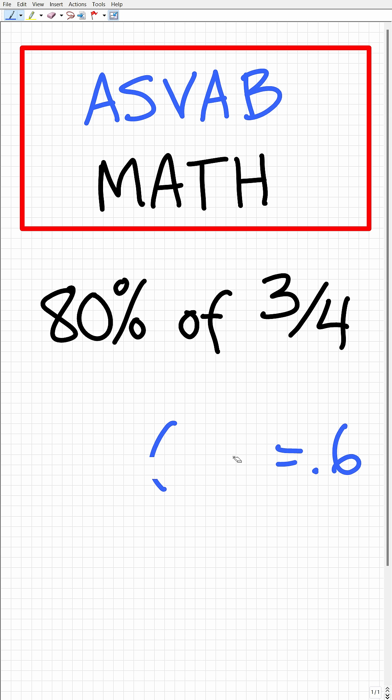So the correct answer here is 0.6. But let's see how to do this without the aid of a calculator. What we're going to do is change our percentage into a fraction. Remember, to change a percent into a decimal, you divide by 100. We can do the same thing here. So 80% is the same thing as the fraction 80 over 100.